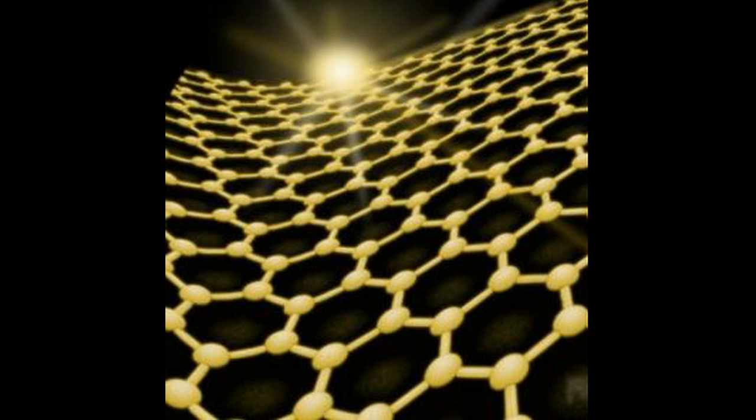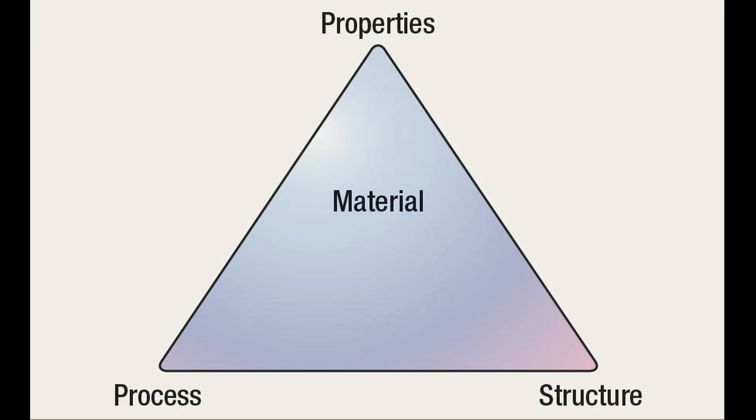Graphene sheets are composed of hexagonally arranged carbon atoms, which create what looks like a honeycomb pattern. Processing the graphene differently alters the structure of graphene, which improves its properties, and allows it to perform better in photovoltaic cells.